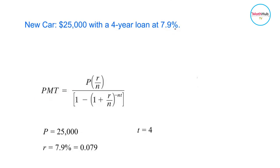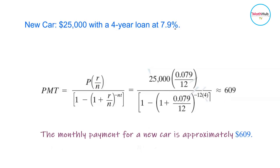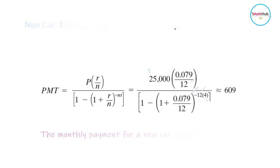We are computing for the monthly payment, so n is equal to 12. Plugging in the information we have to your calculator, you get $609. Therefore, the monthly payments for the new car is approximately $609 per month.